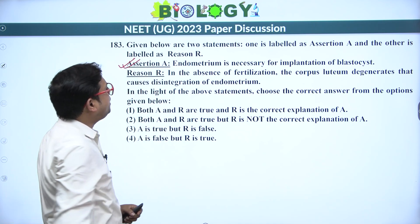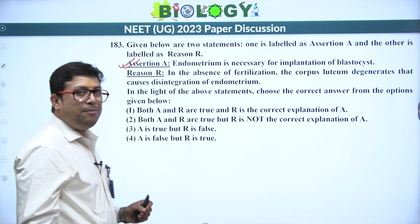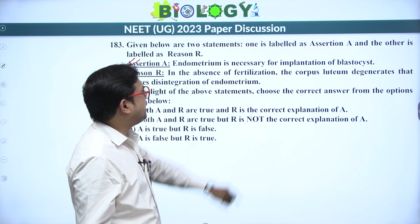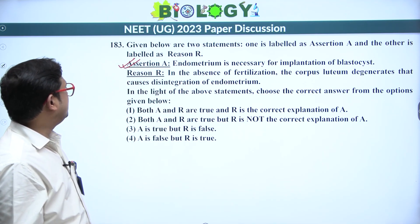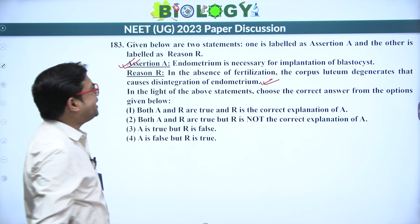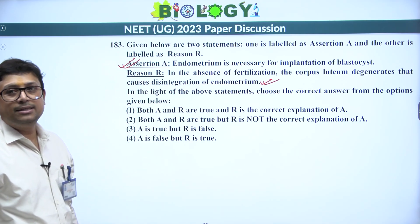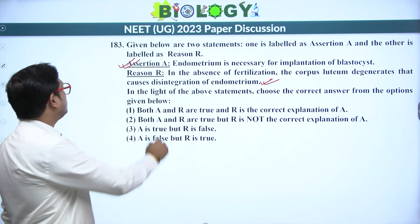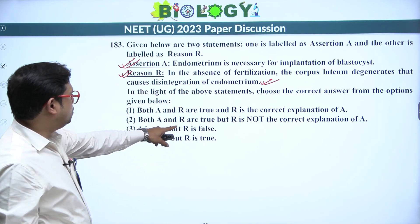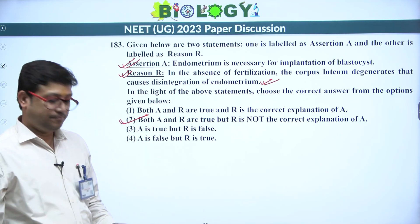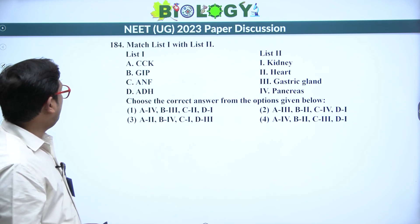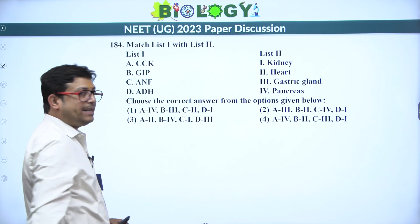Next assertion-reason: endometrium is necessary for implantation of the blastocyst — true, because endometrium is the layer where the blastocyst gets embedded (implantation). Reason: in the absence of fertilization, the corpus luteum degenerates, causing disintegration of endometrium — also true. However, the reason does not explain why endometrium is necessary for implantation. Both A and R are true but R is not the correct explanation of A — answer is 2.